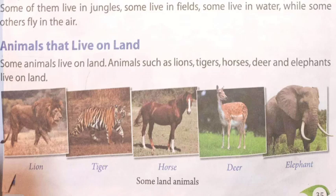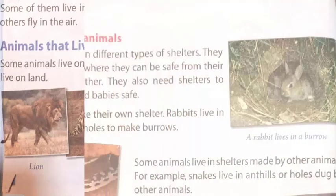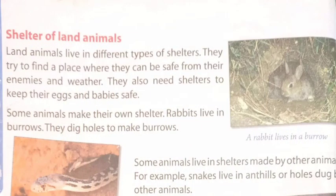Animals that live on land: some animals like lions, tigers, horses, deer and elephants live on land. As you can see from the pictures, there are images of a lion, tiger, horse, deer, and elephant — these animals all live on land.